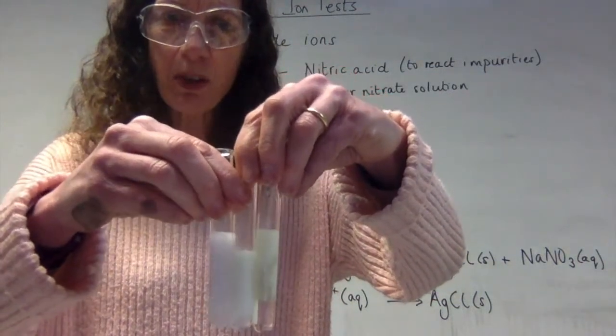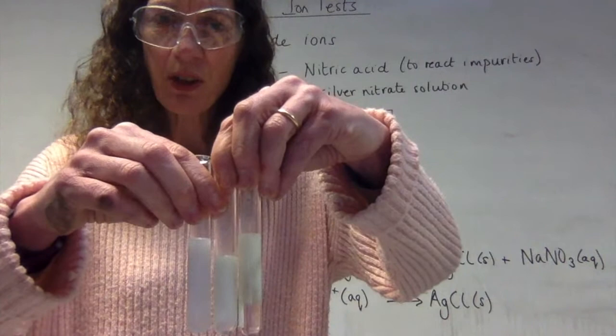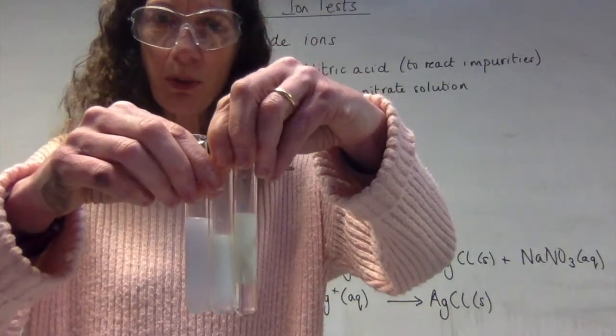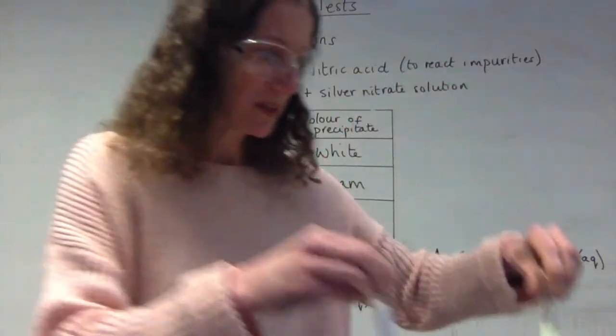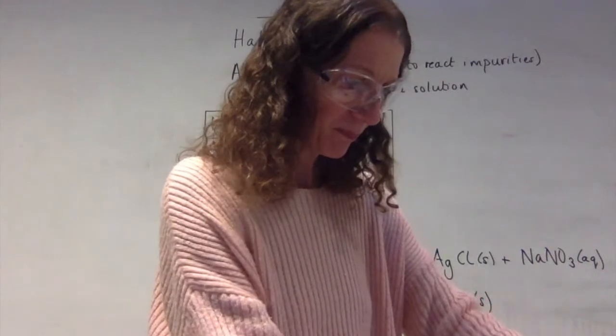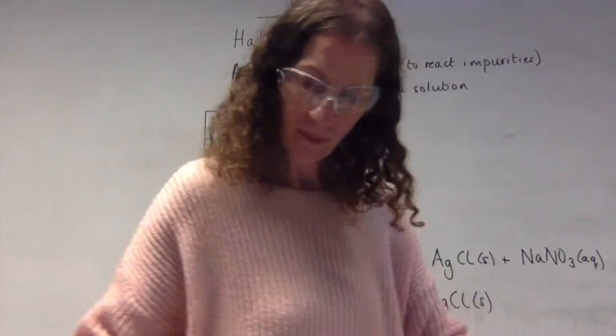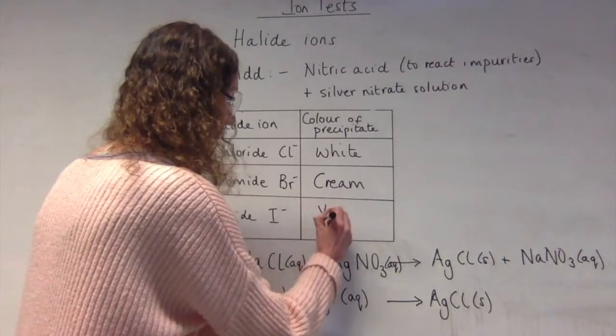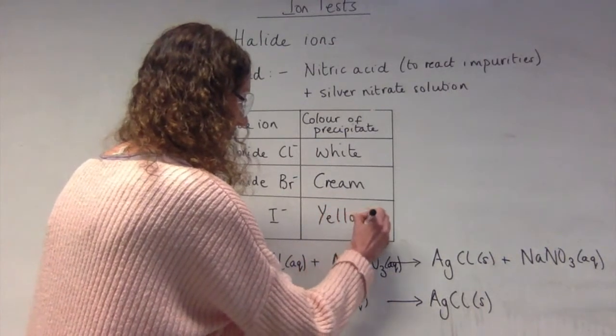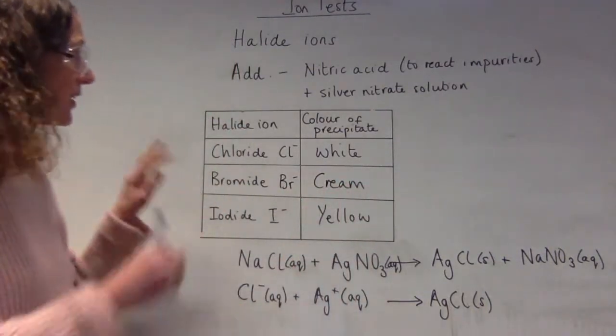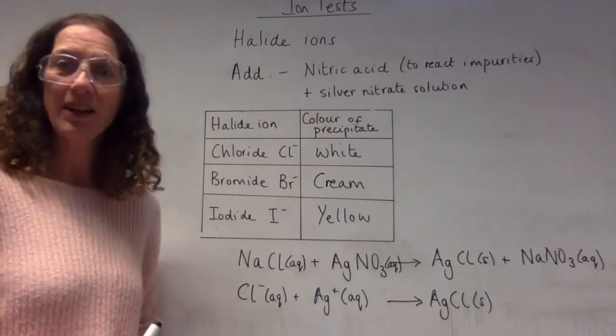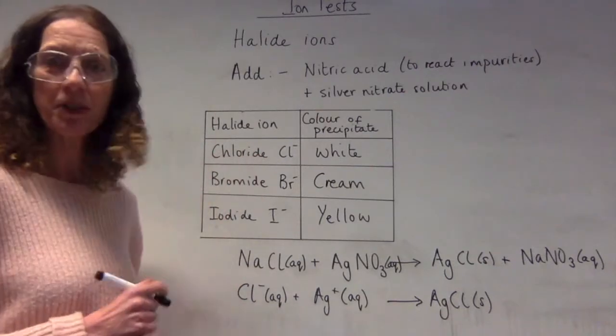So they do get darker precipitates as you go down that group. I'm just going to pop that into the table now. So the last one was yellow. Okay, so these are the tests for our halide ions and those are the precipitate colours.